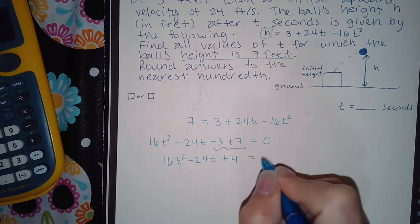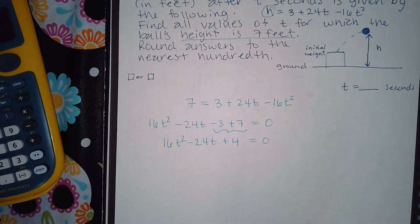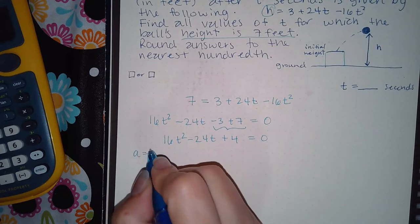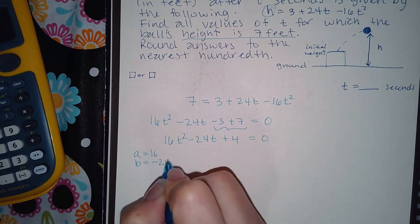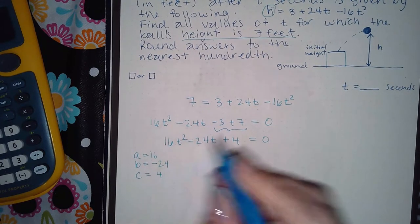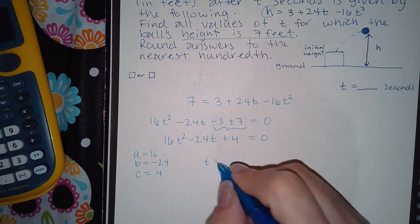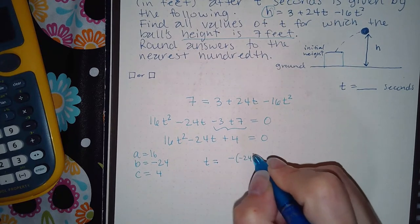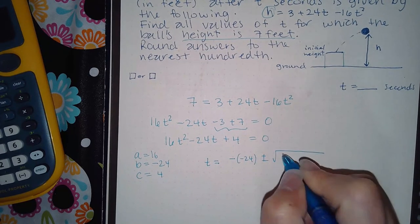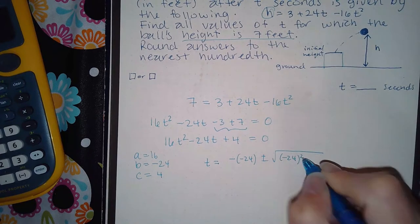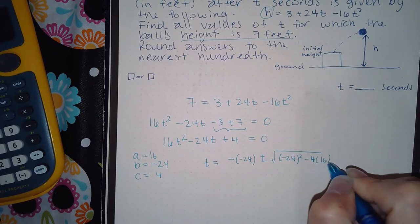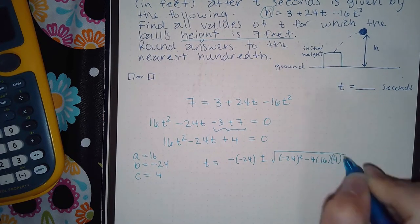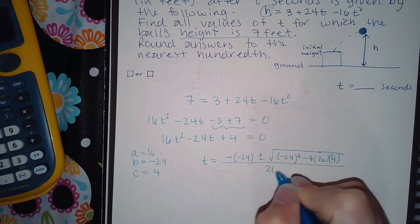And so then if I use my quadratic formula, I get a equals 16, b is negative 24, and c is 4. So t equals negative b plus or minus the square root of b squared minus 4ac all over 2a.